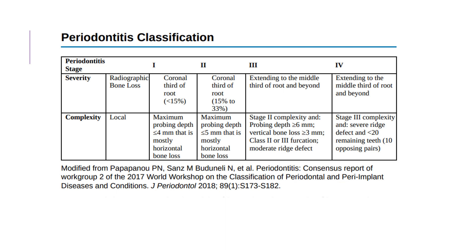This is the latest classification of periodontitis which divides periodontitis into severity and categorizes it into stages 1, 2, 3, or 4. Based on the radiographic bone loss, stage 1 would have the coronal third of the root exposed, and stage 2 has the coronal third exposed to more than 15 to 33 percent.